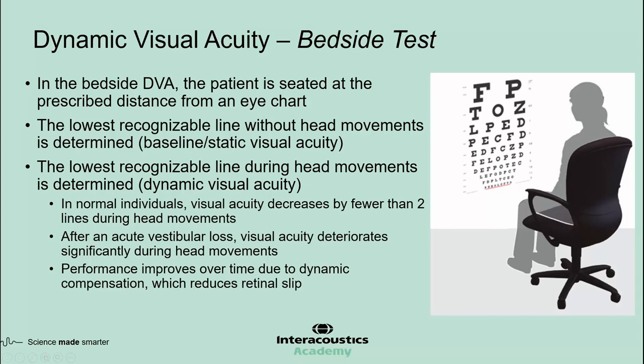The early versions of DVA relied on testing that did not involve any instrumentation. In the non-instrumented or bedside DVA, the patient is seated at a given distance from an eye chart. The examiner asks the patient to read the lowest line without moving the head, which provides the baseline visual acuity. This is sometimes called the static visual acuity, but baseline visual acuity is probably a more appropriate terminology, since it often does not match what patients get in a standard eye exam.